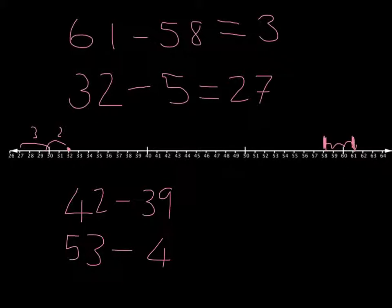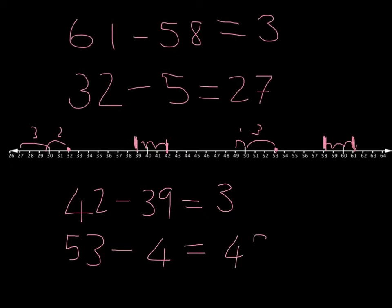OK for 42 minus 39 did you see easily you could look there's 42 there's 39 there are 1, 2, 3 steps between them so 42 minus 39 is 3. For 53 minus 4 it was very easy to say let's start at 53 and take 4 steps back and so get my answer of 49. You're going to practice doing a few subtraction sums yourself now. In each case try and think about what's the quickest easiest and most efficient way to do it.